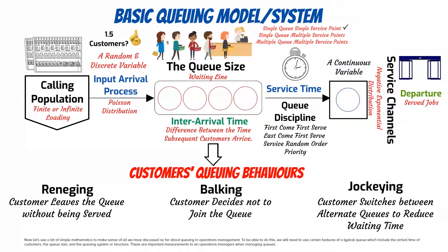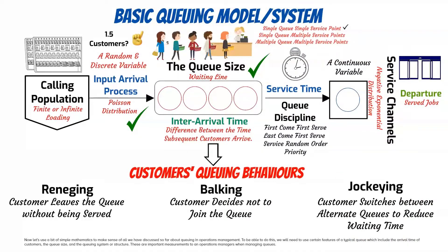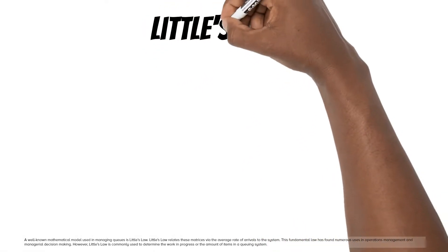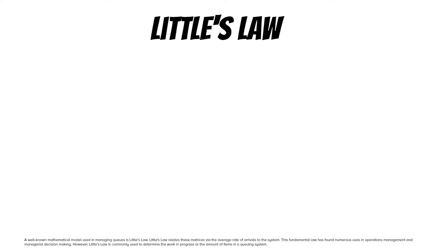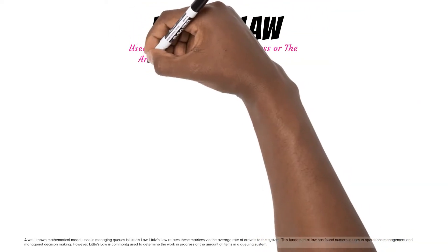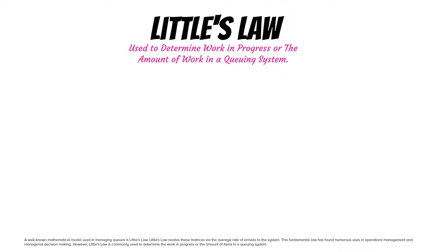Now let's use a bit of simple mathematics to make sense of all we have discussed about queuing in operations management. We will use certain features of a typical queue: the arrival time of customers, the queue size, and the queuing system or structure. A well-known mathematical model used in managing queues is Little's Law. Little's Law relates these metrics via the average rate of arrivals to the system and is commonly used to determine the work in progress, or the amount of items in a queuing system.